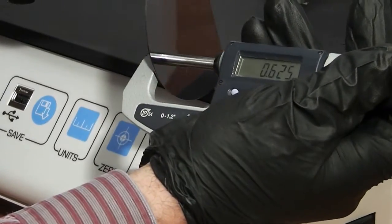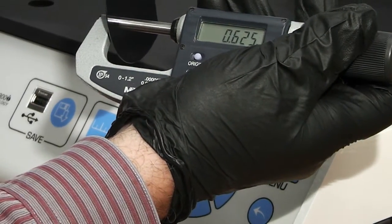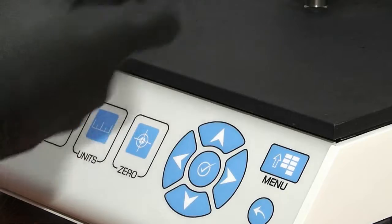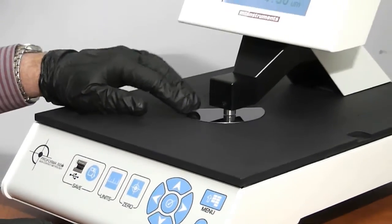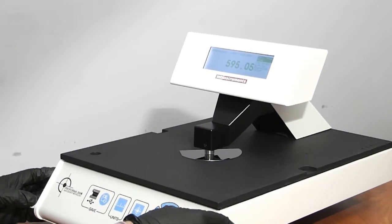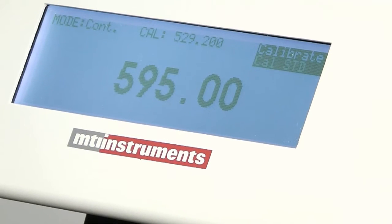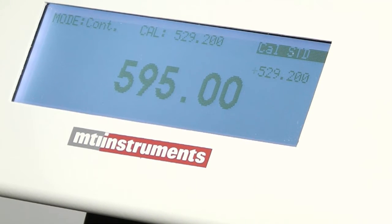So the way we do that is we either have a standard that we know the thickness, or we get a micrometer, and we measure a sample. In this case, we're seeing 625 microns. All right. We slide that under here. We go back and we do a quick calibration at 625 microns. So we change that to 625, and we get a zero in there, 625 microns, enter.